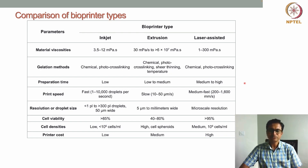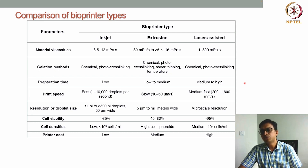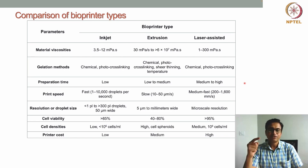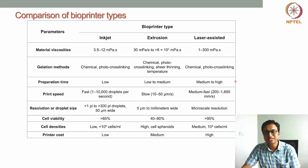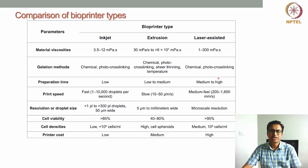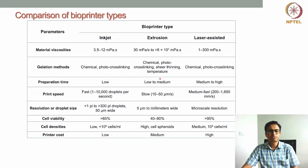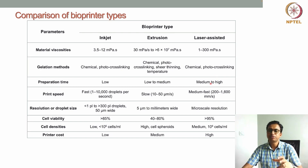In case of laser-assisted bioprinting, the preparation time is medium to high. The ribbon — a three-layer structure comprising glass, energy-absorbing metallic layer, and bioink — has to be prepared in advance before the bioprinting process. That preparation can take significant time, which is why preparation time is medium to high for laser-assisted bioprinting, compared to low for inkjet and low to medium for extrusion.